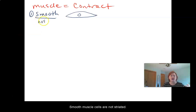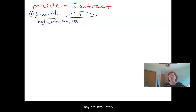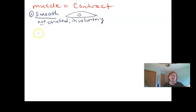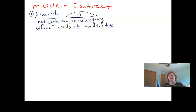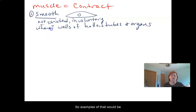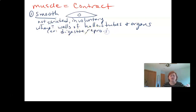Smooth muscle cells are not striated — in fact, they're the only kind that is not. They're involuntary, which as we'll see in a minute is a good thing. Where do we find smooth muscle? We're going to find it in the walls of hollow tubes and organs — examples include the digestive tract, the reproductive tract, the urinary system, and blood vessels.